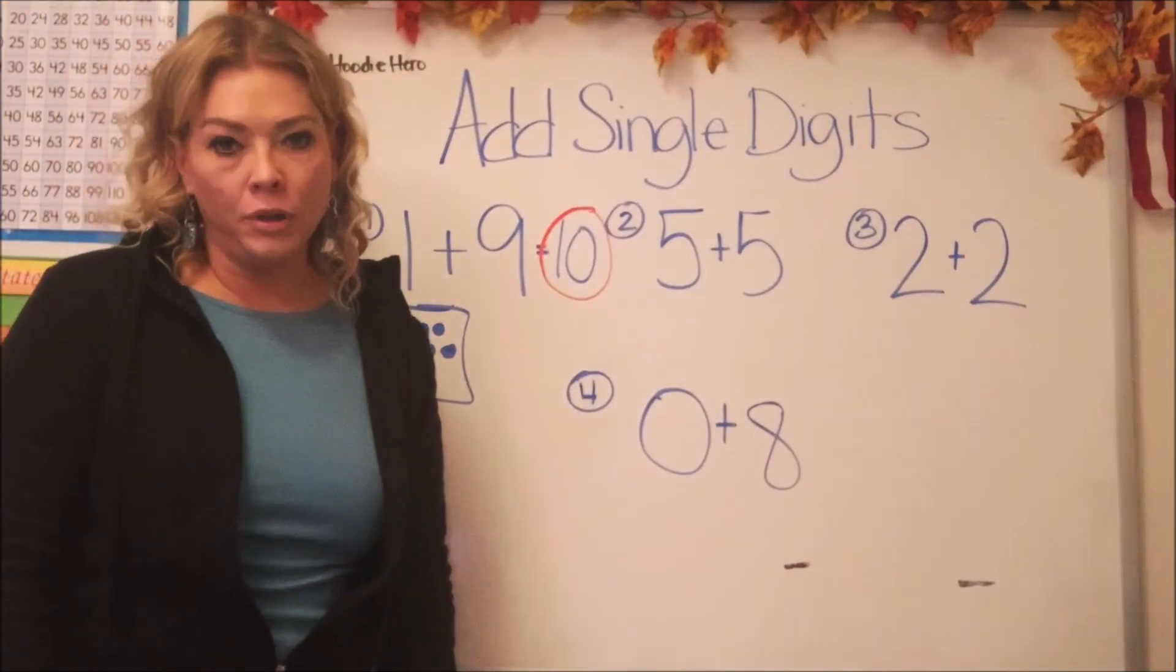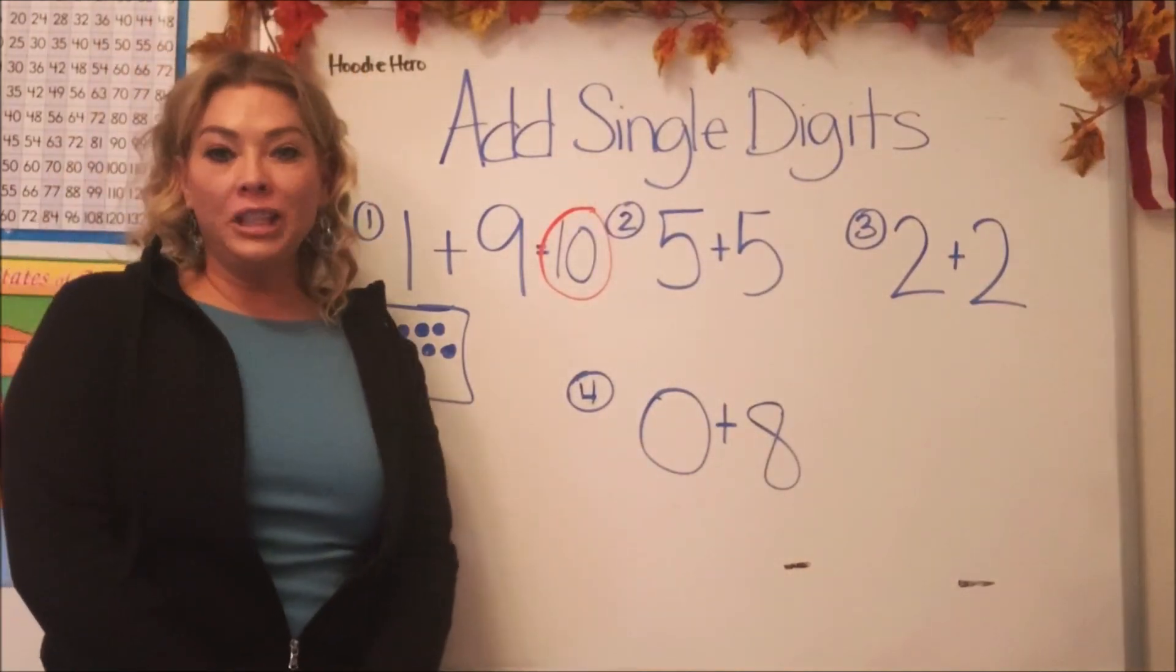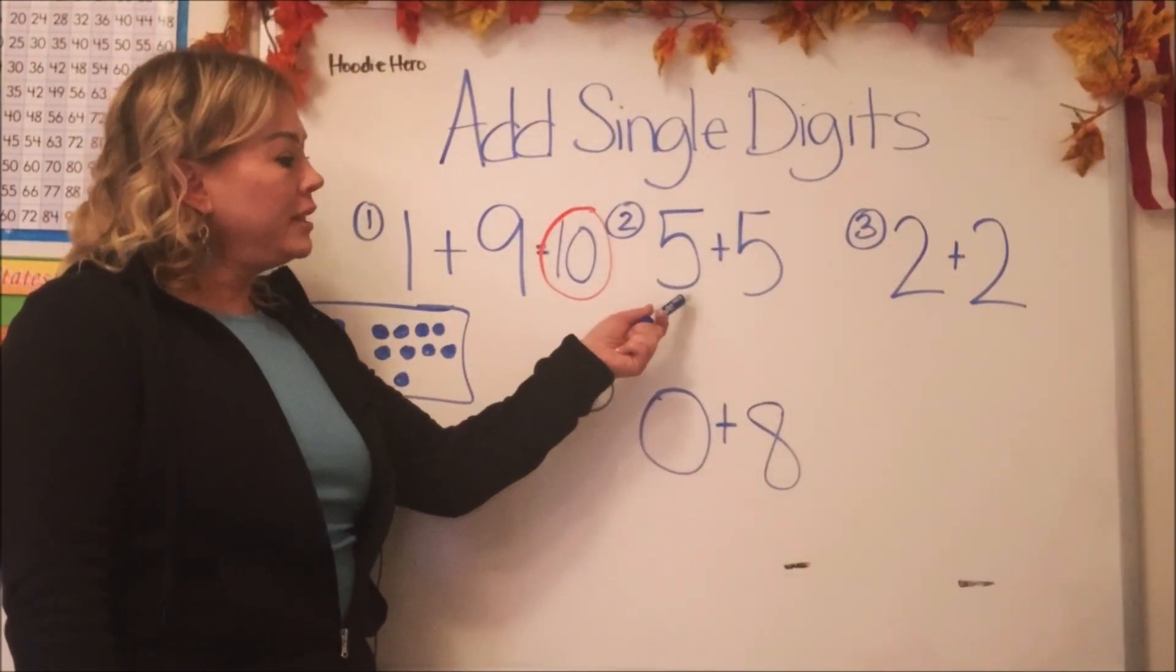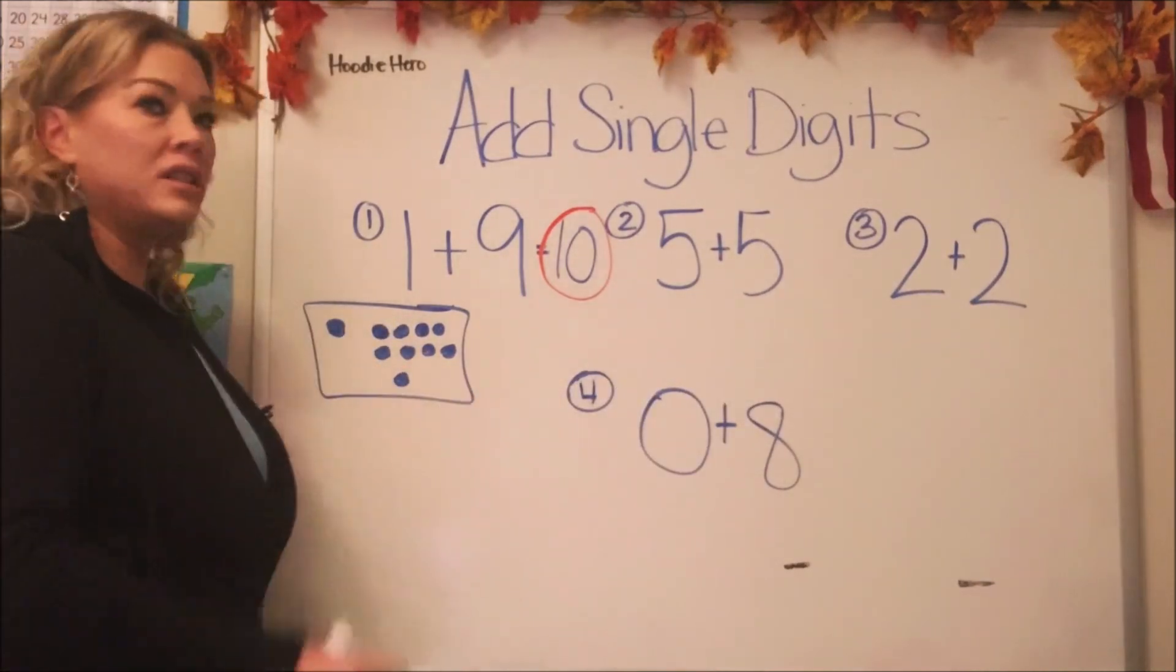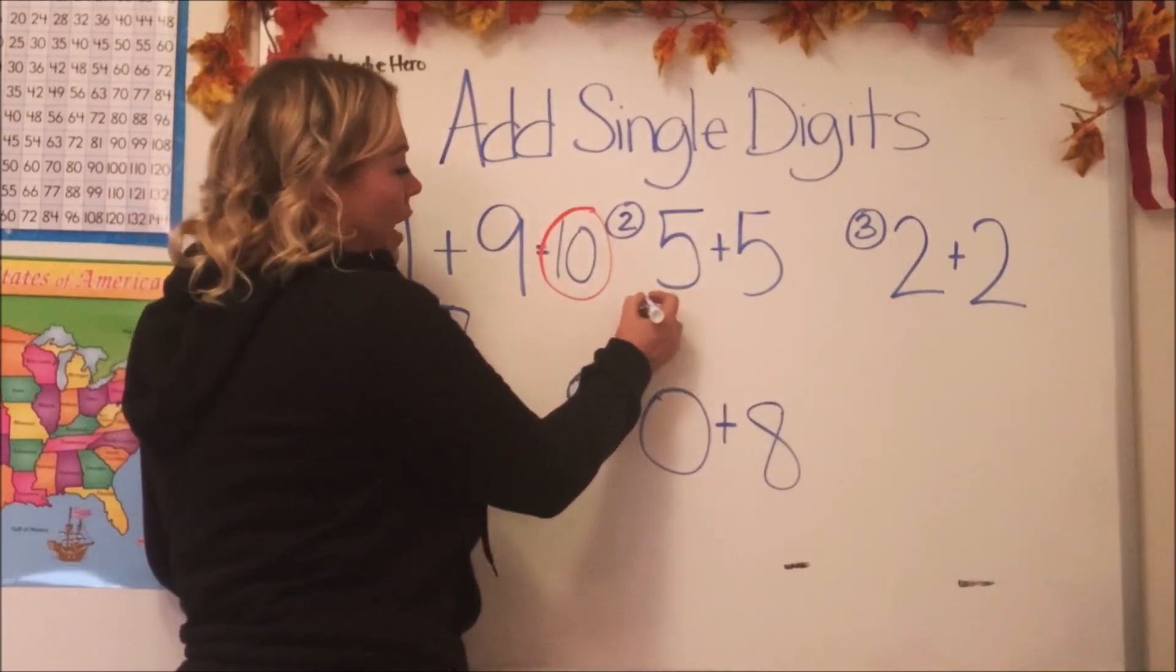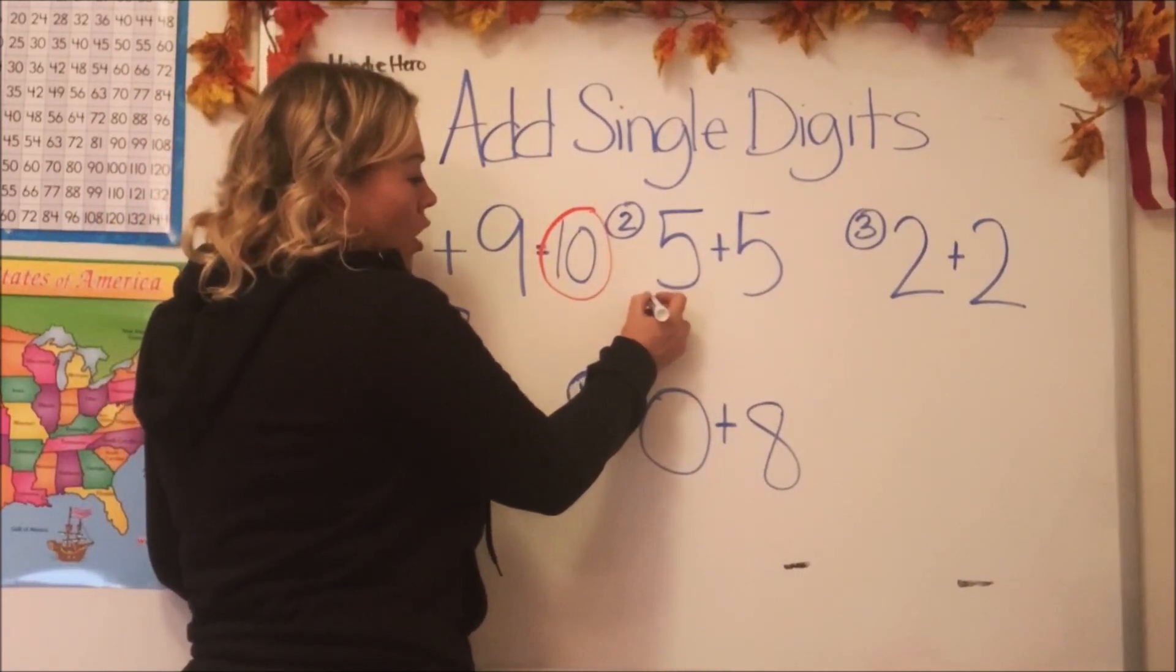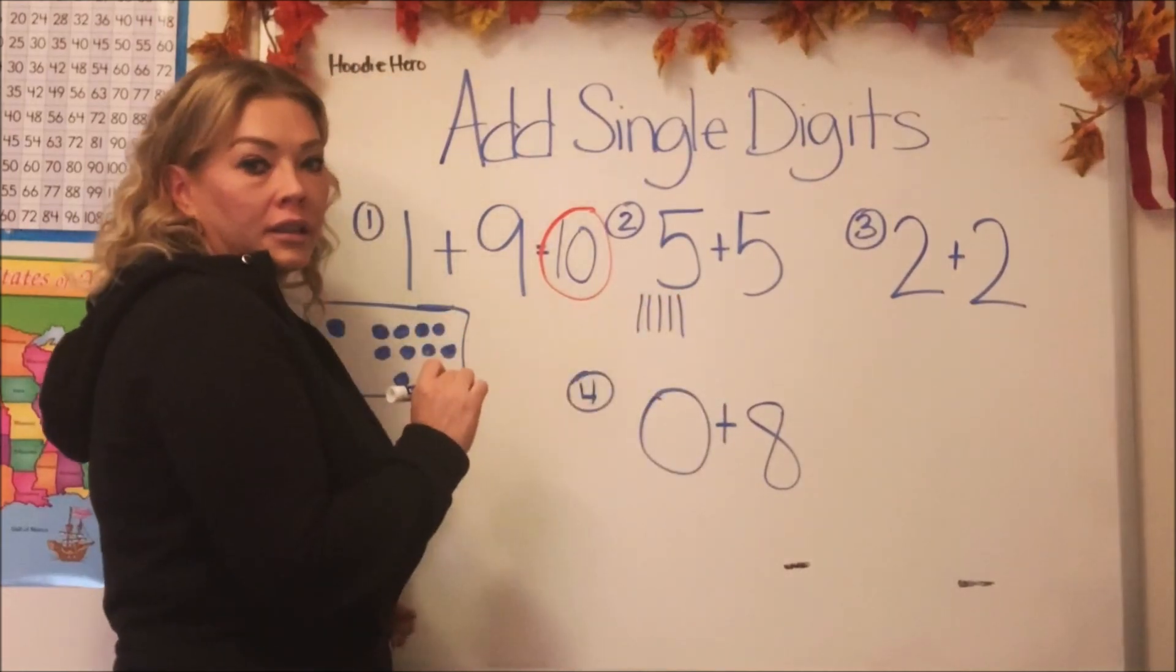Okay, let's do number two. Number two says five plus five. For this one, I'm just going to draw lines. So how many do we have first? We have five. Let's draw five lines. One, two, three, four, five.